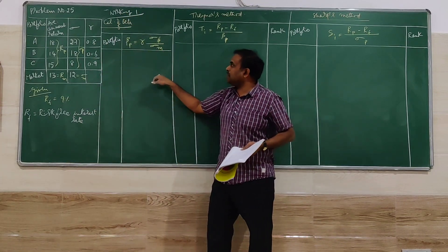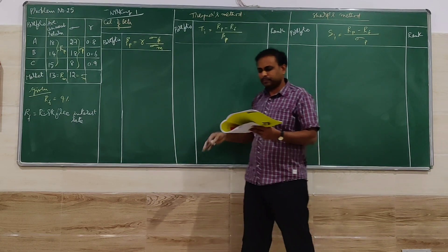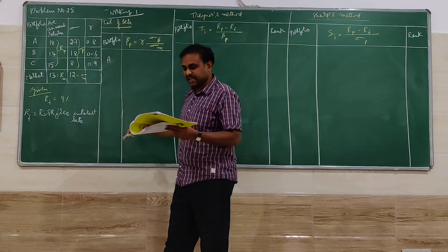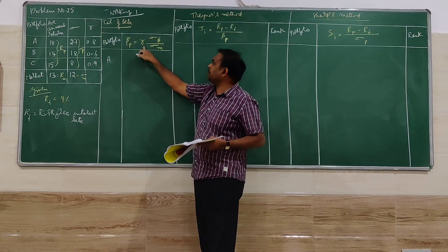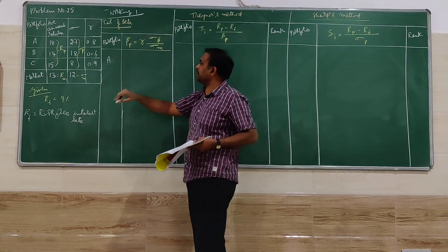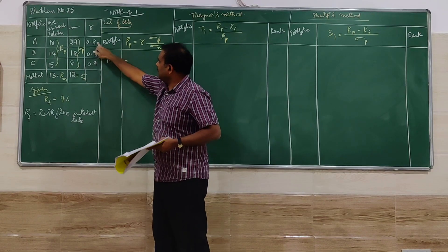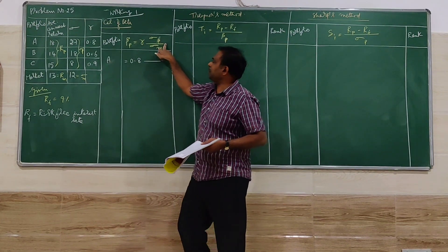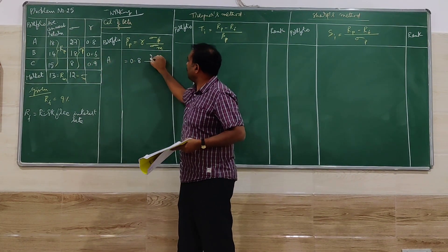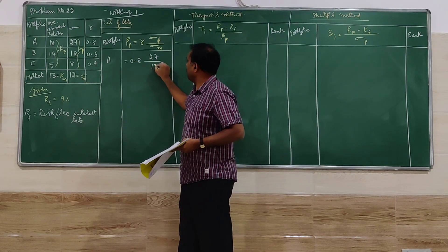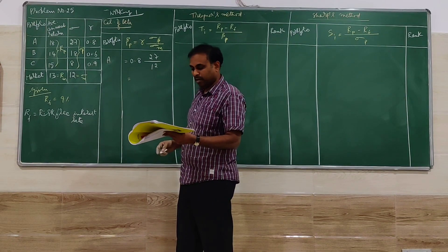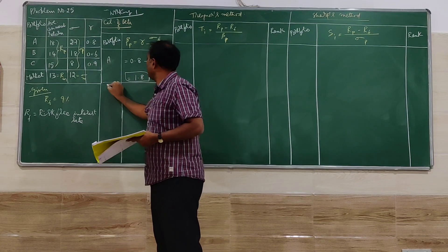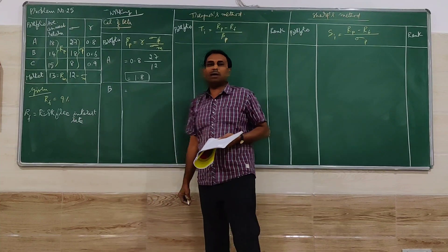To calculate beta, the formula is: Beta = Correlation × (Standard Deviation of Portfolio P) ÷ (Standard Deviation of Market M). For portfolio A: correlation is 0.8, standard deviation of A is 27, and standard deviation of market is 12. Calculating this gives beta of A equal to 1.8.